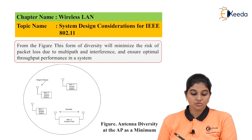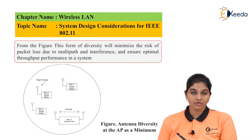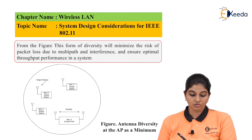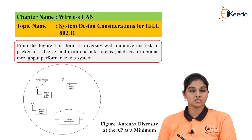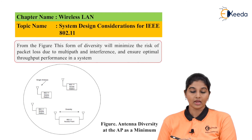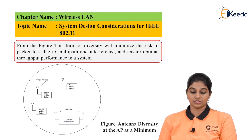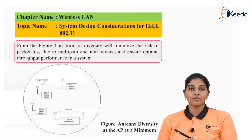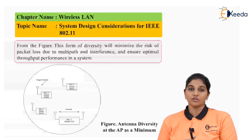A typical setup consists of one access point with multiple mobile stations — each using IEEE 802.11. By placing antennas at a proper distance, antenna diversity is achieved.